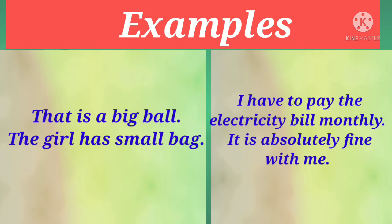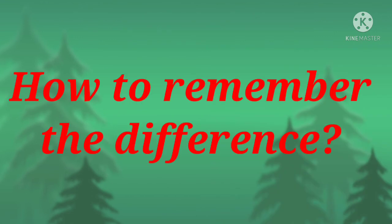We can take some more examples. For adjective we can have: big, small, emotional, hopeful — all these are adjectives. And adverbs can be: monthly, yearly, half-yearly — all these are adverbs.